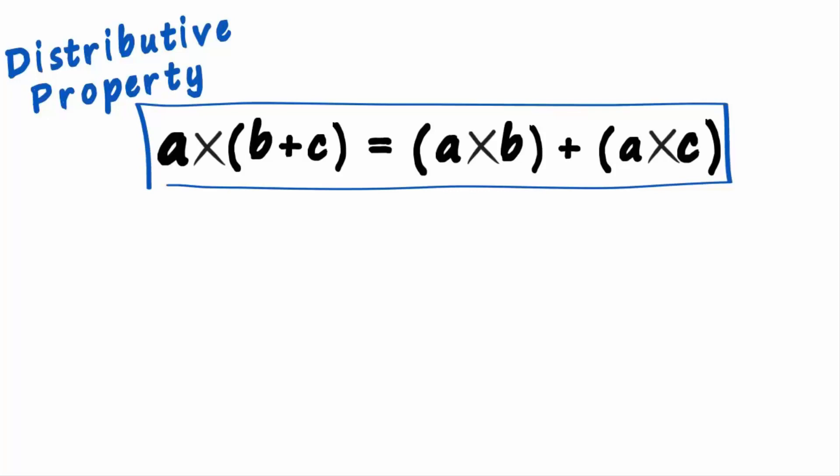This is what the distributive property tells us: a multiplied by b plus c is equal to a multiplied by b plus a multiplied by c. This common term is multiplied with b first and then with c.